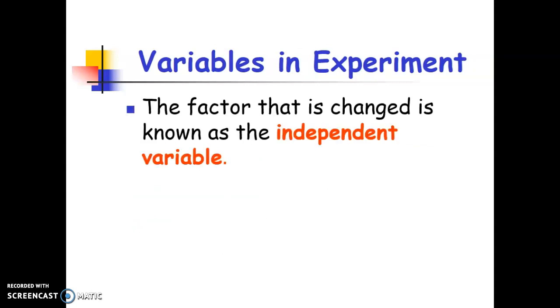So as we look at specific variables, the factor that is going to be changed, as we said, is called the independent variable. This is what I am changing in my experiment. So think of our brine shrimp lab. What did we specifically change in our brine shrimp lab to look at our results?